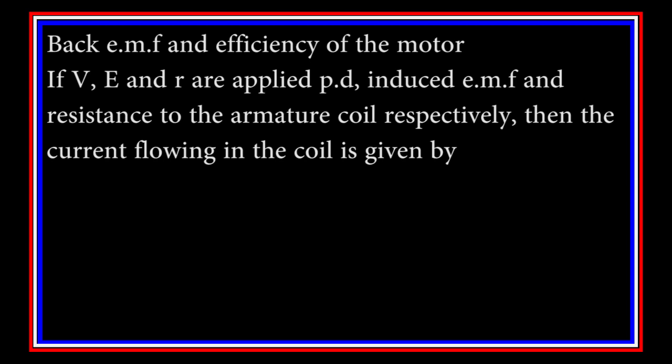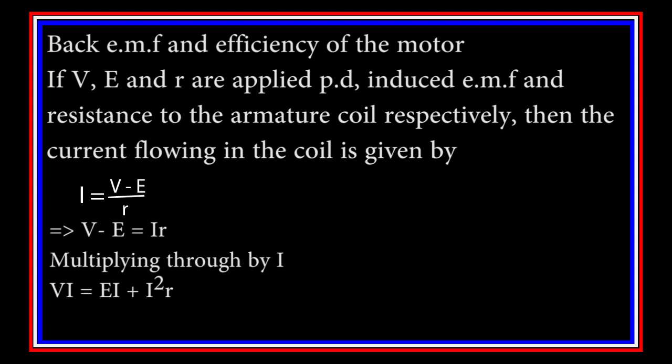then the current flowing in the coil is given by I = (V - E) / R, or V - E = IR. Multiplying through by I, VI = EI + I²R.